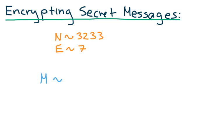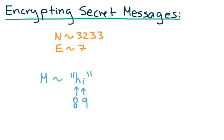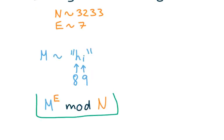So m represents a secret message and will have a numerical integer value that the sender picks. Let's say that the sender wants to send a secret message of 'hi' to the key generator. He would translate these letters h and i to numbers. Since h is the eighth letter of the alphabet and i is the ninth letter of the alphabet, the message 'hi' can be translated to the numerical value of 89. So 89 is what we're going to say the sender's secret message is. Now to encrypt the message 89, the sender has to plug it into this expression: m to the e mod n.